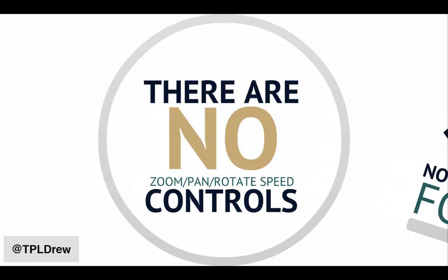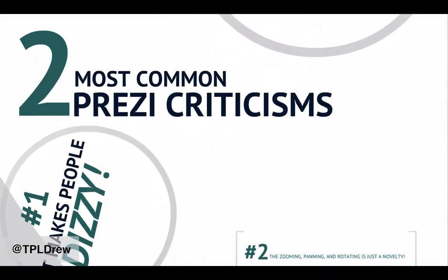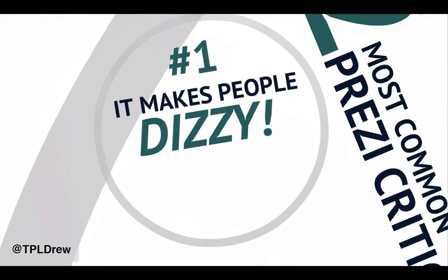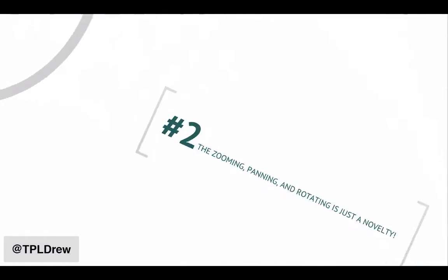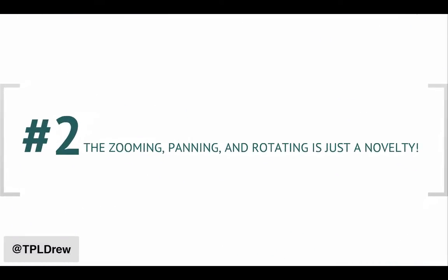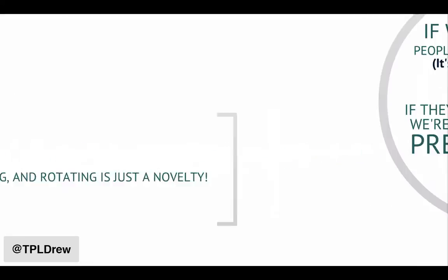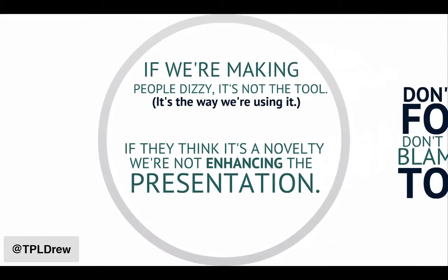There's no tool in Prezi where you can change the speed for a specific path — you're not missing it. This presentation assumes that you already know how to path; we're not going to go into that today. But if you need that question answered, please let me know. So the two most common Prezi criticisms are: number one, it makes people dizzy — and you can even see with that rotation there, it's not a great rotation. And number two is that zooming, panning, and rotating is just a novelty. And I don't think they're wrong.